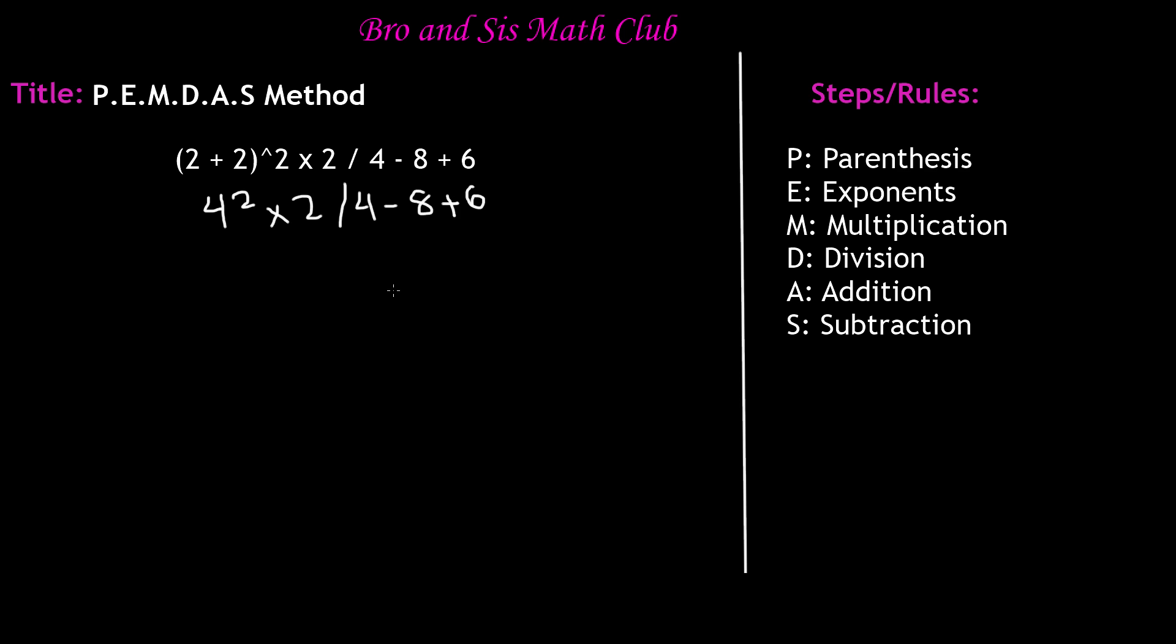Now next step, exponents. In this problem, we have 4 to the power of 2. Remember, when we're solving exponents, we're multiplying that number that many times. So 4 to the power of 2 means multiplying 4 twice, so 4 times 4, which equals 16. We'll write 16 and copy everything else down just as it is. So times 2 divided by 4 minus 8 plus 6.